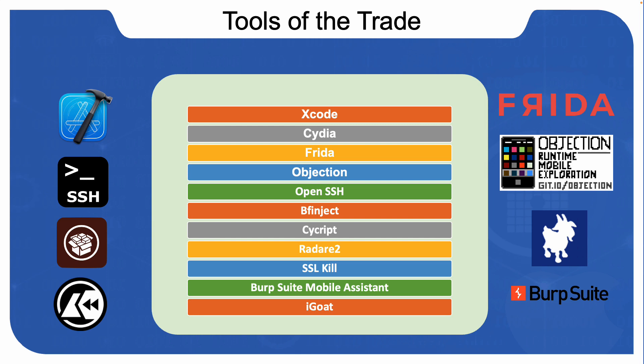SSL Kill Switch allows you or anyone on the same network of a target working device to easily perform man-in-the-middle attacks. It's also used to bypass SSL certificate pinning.